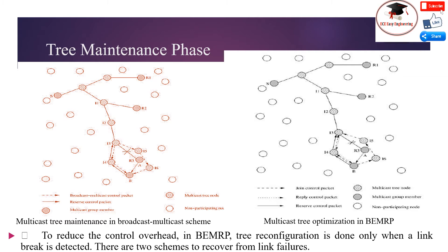The second scheme is the local rejoin scheme. In this scheme, the downstream node of the broken link tries to rejoin the multicast group by means of limited flooding of a join packet. When the link between receiver R3 and its upstream node I3 fails, R3 floods the join control packet with a certain time to live value depending on topology. When tree nodes receive the join control packet, they send back reply packets, and R3 rejoins the group by sending a reserve packet to the new upstream node I4.